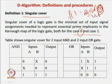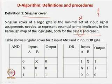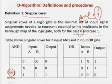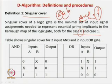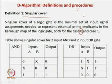An essential prime implicant is mandatory to be present in the function representation because it has a prime minterm not covered by others. For finding the singular cover, we select the prime implicants and find the minimal set of input assignments needed to represent the essential prime implicants for the case of output 0 and 1. Let us take the case of output 0 for an AND gate.